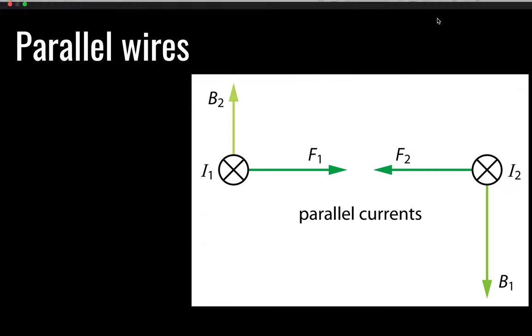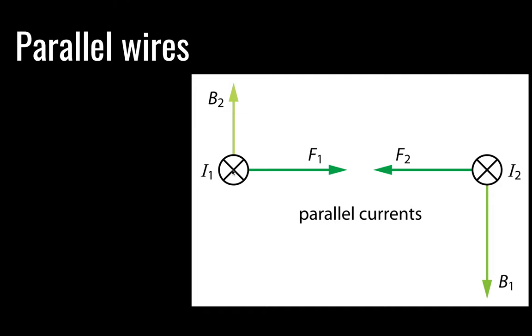Next up we have parallel wires. So here, we need to talk about conventions a little bit. So whenever you see a circle like this with a cross through it, you can imagine this as the end of an arrow. And if you've ever seen an archery arrow, you know that there are feathers at the end. And those feathers are often in a cross shape. So what that means in this case, is that our arrow is pointed into the computer screen right now. So and both of these then are pointed into the computer screen. What we have then are parallel currents. They're running in the same direction, parallel to each other.